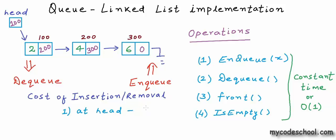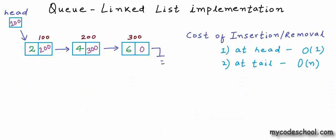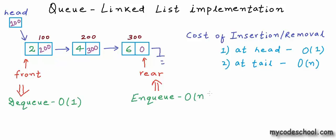The cost of insertion or removal from the head side is O(1). However, in a normal linked list implementation, if we insert at one side and remove from the other, then one of these operations — enqueue or dequeue depending on which sides we pick — will cost O(n). The requirement is that both operations must take constant time, so we need to do something to ensure both enqueue and dequeue are O(1).